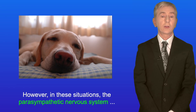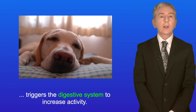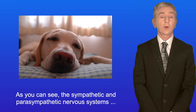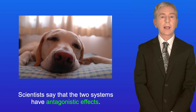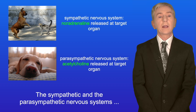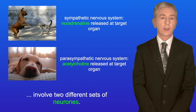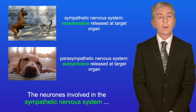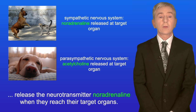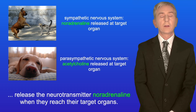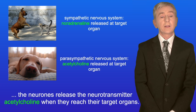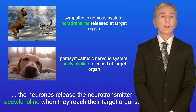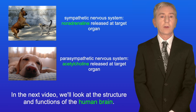However, in these situations the parasympathetic nervous system triggers the digestive system to increase activity. So the sympathetic and parasympathetic nervous systems generally have opposite effects on their target organs — scientists say that the two systems have antagonistic effects. The neurons involved in the sympathetic nervous system release the neurotransmitter noradrenaline when they reach their target organs, while in the parasympathetic nervous system, the neurons release the neurotransmitter acetylcholine when they reach their target organs. In the next video, we look at the structure and functions of the human brain.